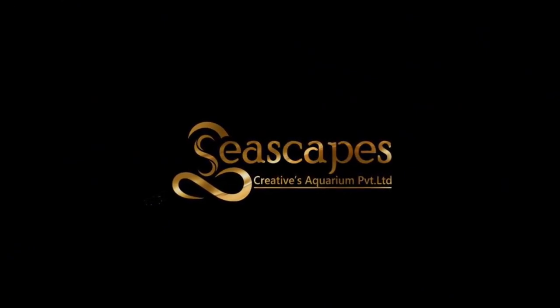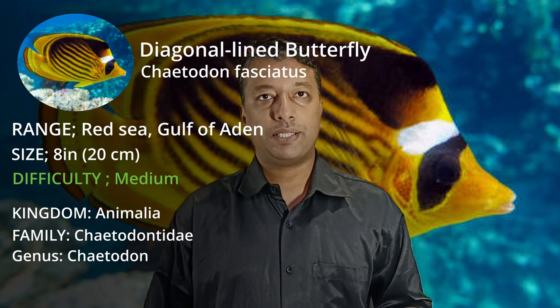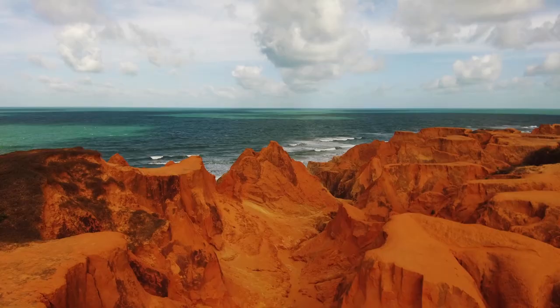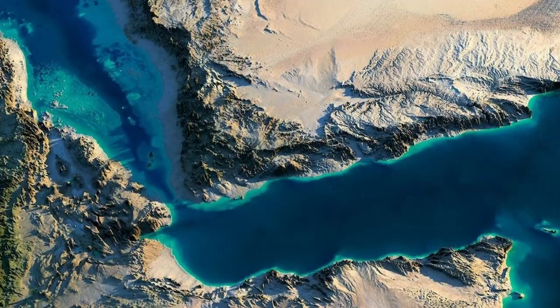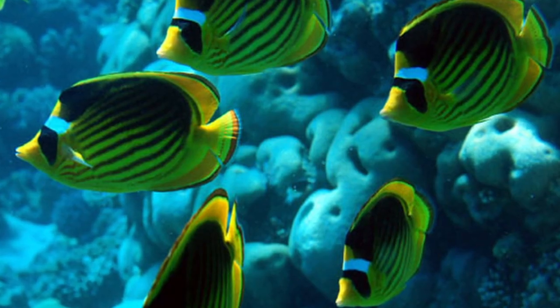So friends, in this episode our first fish is Chaetodon fasciatus. The common name is Diagonal Lined Butterfly. Its range is the Red Sea and Gulf of Aden. How big is this fish? It is about 8 inches, making it a large-sized butterfly.